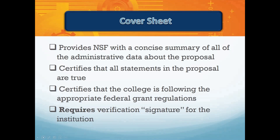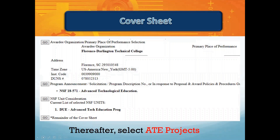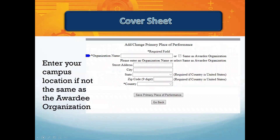There is no grace period for doing this. If this certification isn't complete when the proposal is submitted prior to the deadline, the proposal will be returned without review. At this time, the majority of ATE proposals, including small grants for institutions new to ATE, will be submitted in the ATE projects track. In the NSF Unit Consideration box, select DUE-ATE projects. This screenshot shows how you select the NSF Division of Undergraduate Education and Advanced Technological Education Program in identifying the funding opportunity for your proposal submission. Most often, the grantee organization or fiscal agent for the grant is the same as the performing organization. When this is not the case, you will need to specify the location of the fiscal agent as well as the location of the performing organization.